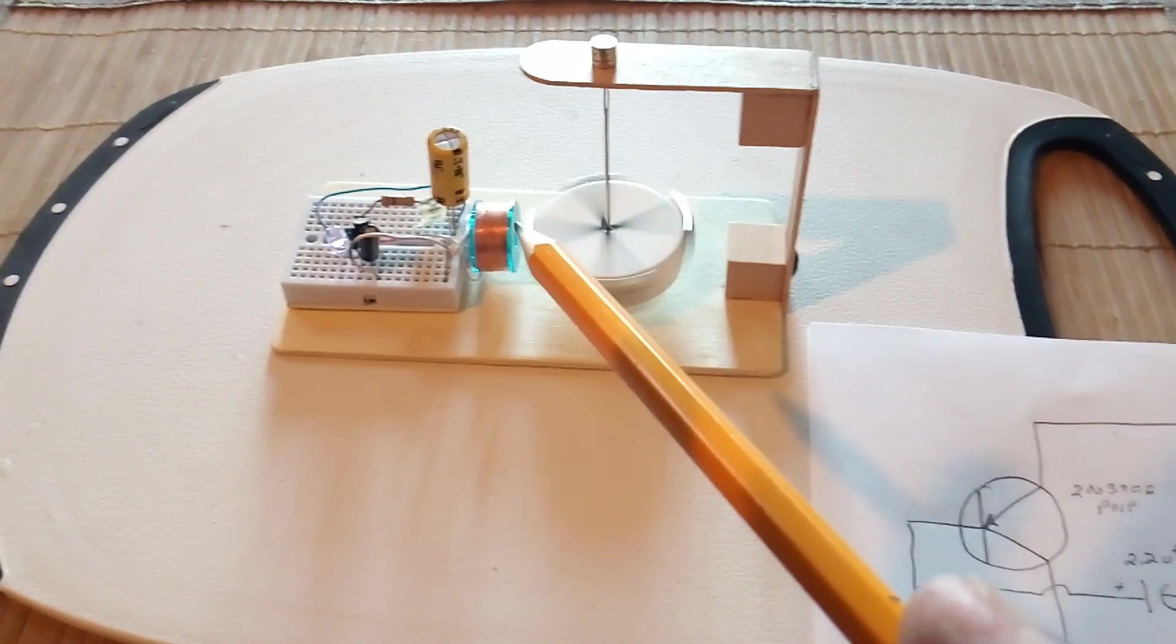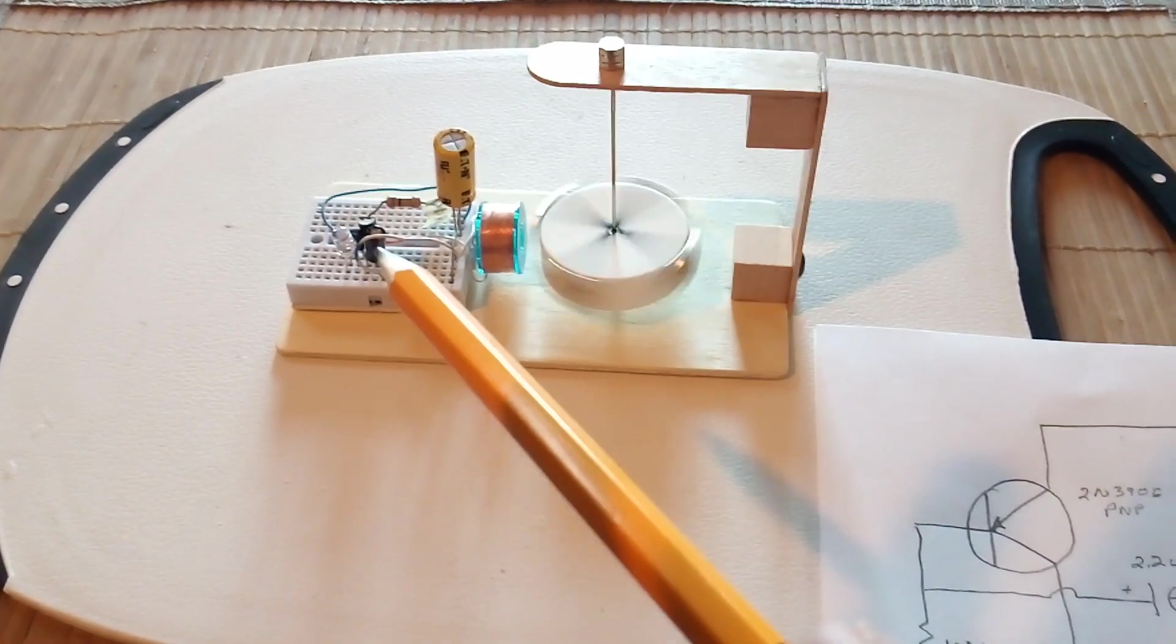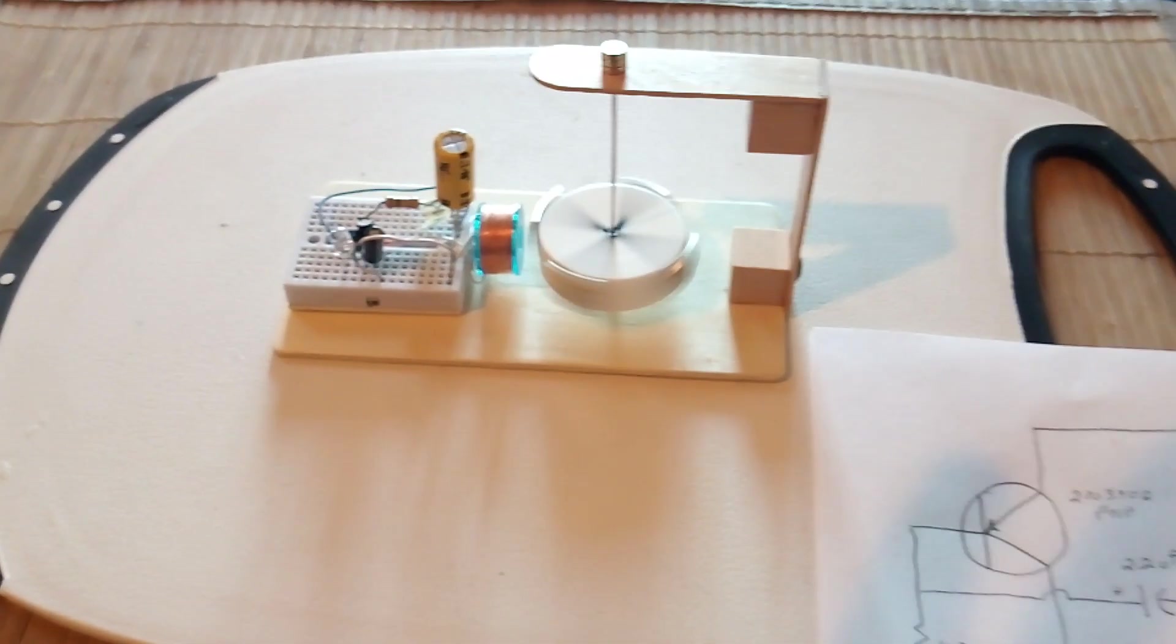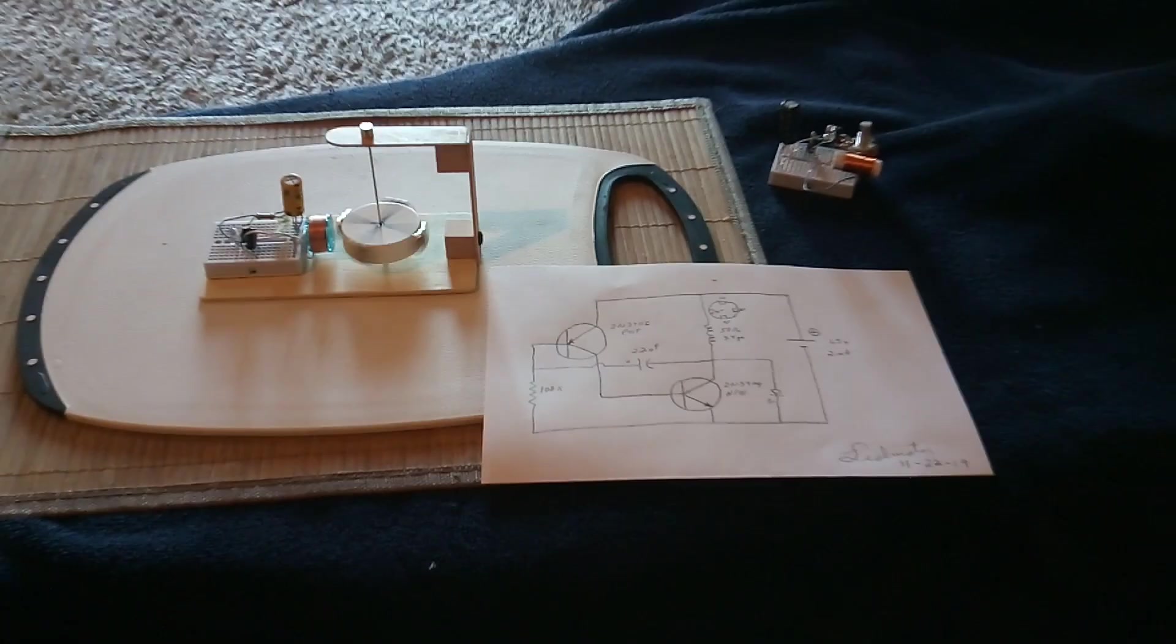But this is actually operating with a change in induction on that coil there, and it's inducing a current into the coil which is causing the circuit to override the flash that's going on all the time. So anyway, that's the latest with my projects. Thanks for watching.